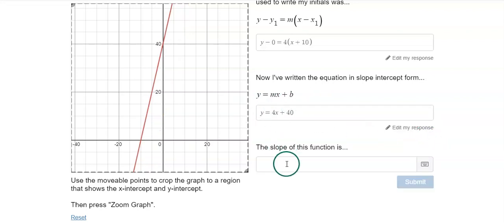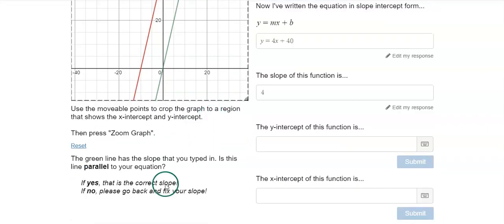Now, once I press submit, it asked me for the slope. Well, the slope is four, I can see that in both equations. So I'm going to type in the number four, and a green line is going to pop up. The green line has a slope that you typed in. So this green line is just a basic equation that has a slope that I typed in.